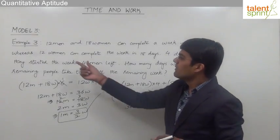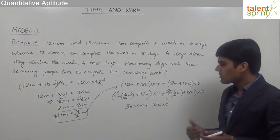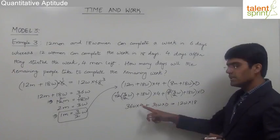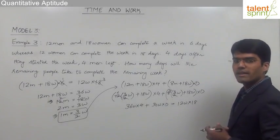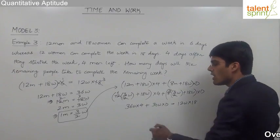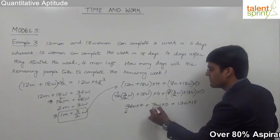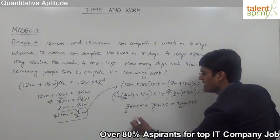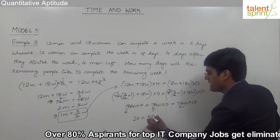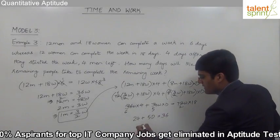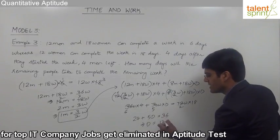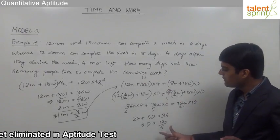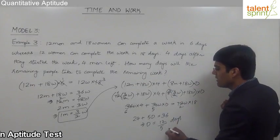The total work equals 12 women × 18 days = 216 woman-days. So 36 × 4 + 30t = 216. Taking 6 common: 6(6 × 4 + 5t) = 6 × 36, giving 24 + 5t = 36. So t = (36 − 24) / 5 = 12/5 = 2.4 days. The remaining work can be finished by the remaining people in 12/5 days, or 2.4 days.